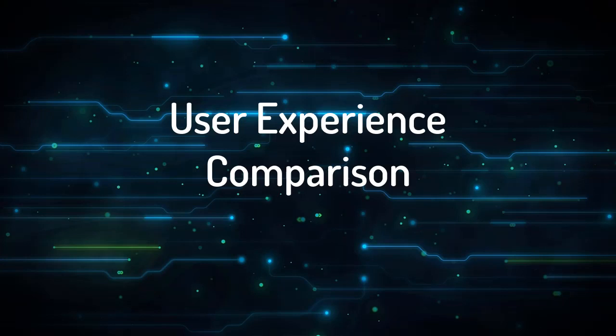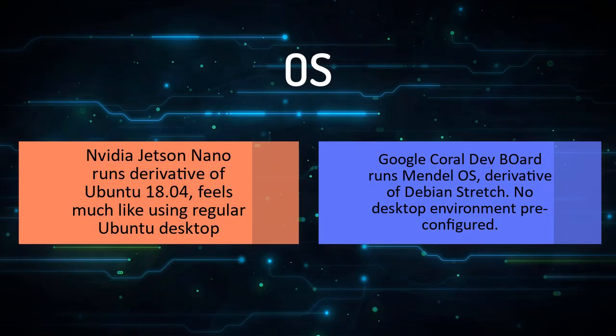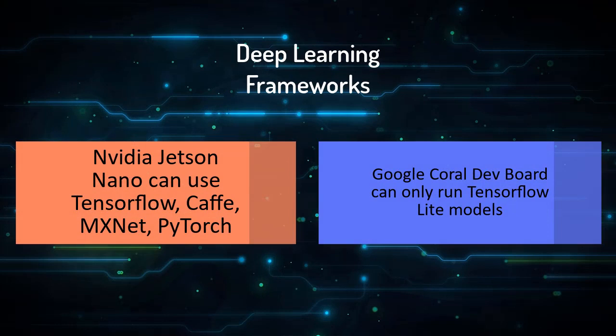Let's compare the user experience for both boards. NVIDIA Jetson Nano runs a derivative of Ubuntu 18.04 and feels much like a regular Ubuntu desktop. Google Coral Dev Board runs Mendel OS, a derivative of Debian Stretch, with no desktop environment pre-configured out of the box, though you can install your favorite desktop environment yourself. For deep learning frameworks, on the Google Dev Board you can only use TensorFlow Lite, whereas on Jetson Nano you can use any deep learning framework of your choice.